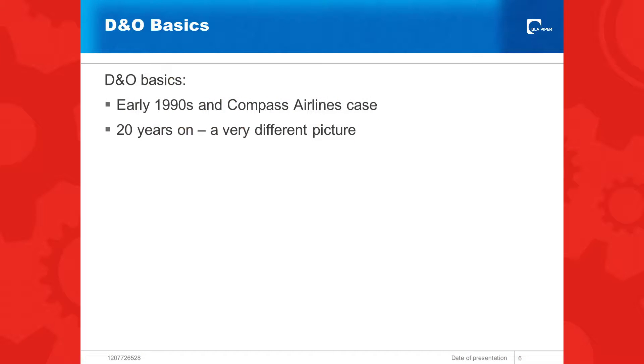Apparently 1923 was the first claims-made policy. I have no confirmation of that — I probably got it off the internet. But I remember D&O — the first time it really came onto the market was in the early 1990s, and there was a case involving Compass Airlines. I think you can still find it at HIH v Carden. And when the Australian Professional Indemnity Group started up, we'd have meetings and the common joke would be, 'You're still selling D&O?' 'Does it cover anything?' 'No.' That case confirmed it when indemnity was successfully denied to some directors. But 20 years on, it's a very, very different picture.